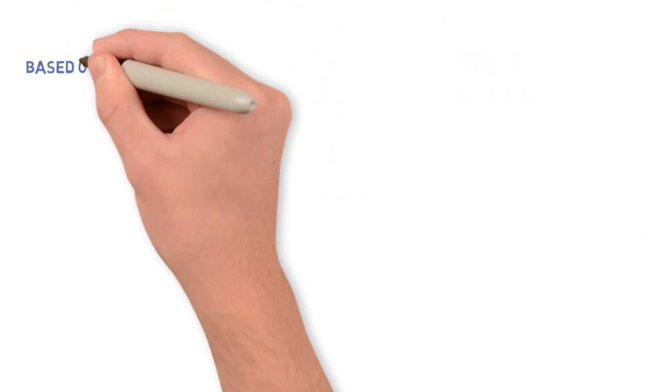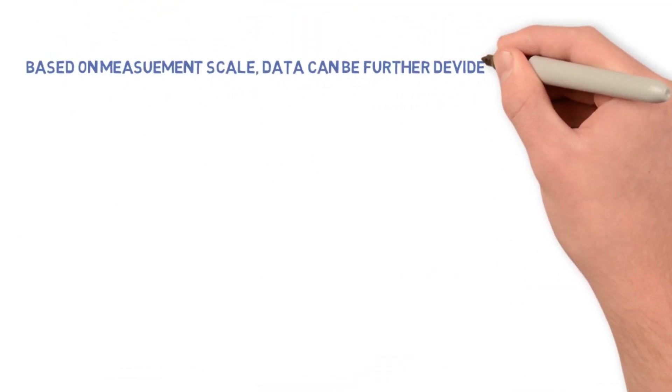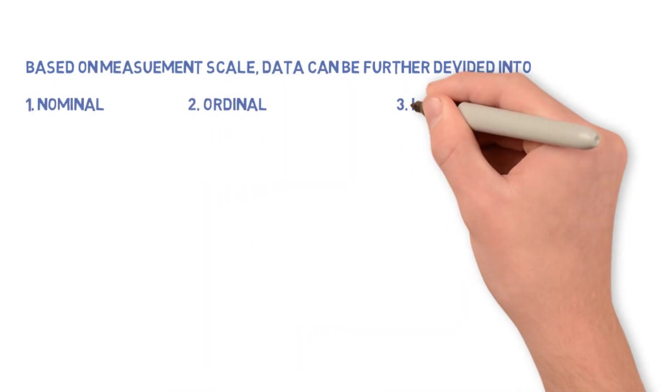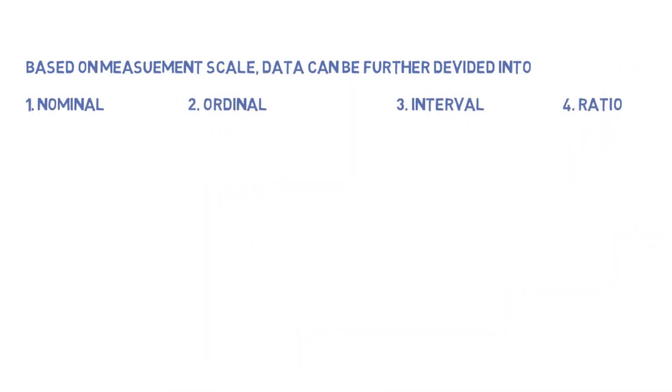Based on measurement scale, data can be further divided into four categories. The first one is nominal, ordinal, interval, and ratio.